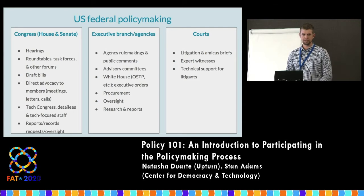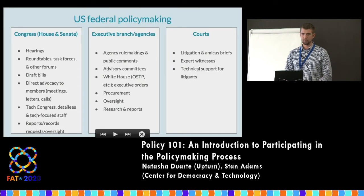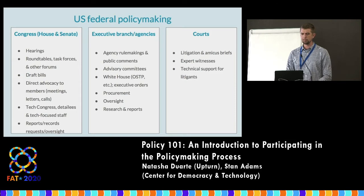This is often why we file comments — to establish all these points on the record so that after the fact, when the agency does whatever they're going to do anyway, we can say we told you not to do that and we disagree with your outcome. To challenge an agency you need to show that either they failed to consider something, they did a bad job of considering something, or they just ignored everyone's advice. The keywords are 'arbitrary and capricious decision-making.' That leads into the next phase of advocacy — filing amicus briefs that help the court understand the issue.